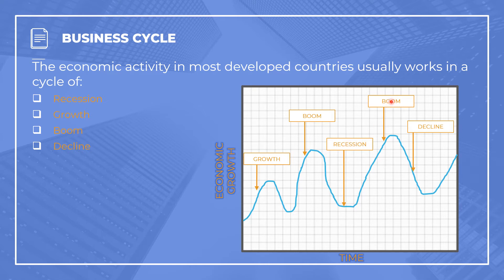We can see another boom where the graph goes to a real high again. Whenever there is a downward turn on the graph, with the line on a downward slope, it is called a decline. When it's on an upward slope, it's growth; at the highest point it's a boom; at the lowest slump it's a recession. When talking about the economic climate, we're looking at where the country's economic growth sits on this graph.